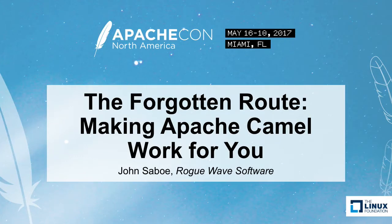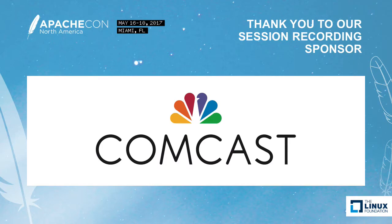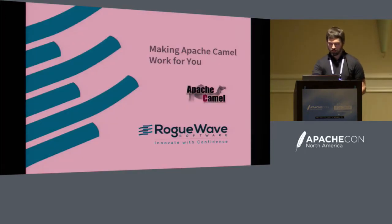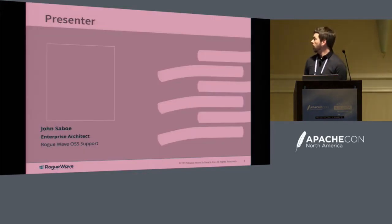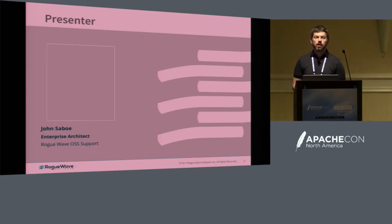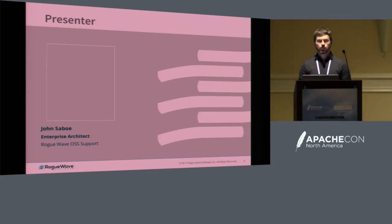Hi, I'm John Sabo. I'm with Rogue Wave Software, and I'm going to be presenting on Apache Camel. I'm an enterprise architect with the OSS support team at Rogue Wave Software. We support a big variety of open source products. I personally do a lot of work with Apache ActiveMQ, Apache Camel, and also work with Tomcat and other web servers.